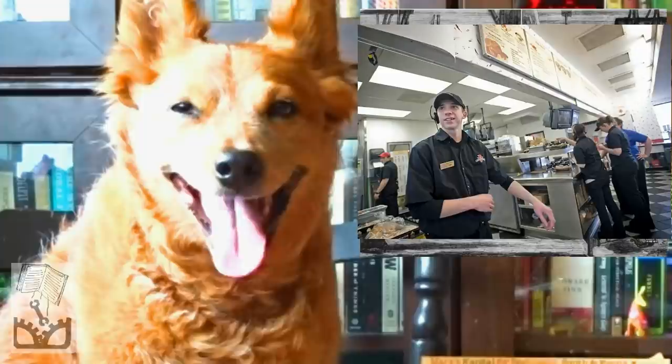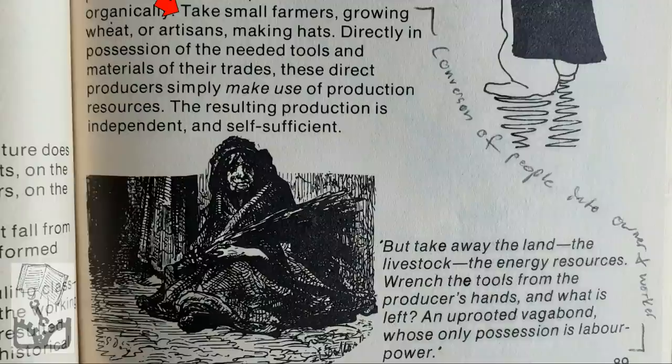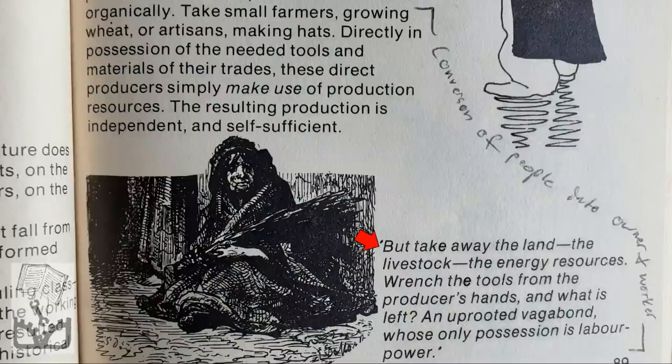The workers own nothing but their own labor power. As Smith and Evans put it: 'Take small farmers growing wheat, or artisans making hats, directly in possession of the needed tools and materials of their trades — these direct producers simply make use of production resources, the resulting production is independent and self-sufficient. But take away the land, the livestock, the energy resources, wrench the tools from the producer's hands, and what is left? An uprooted vagabond whose only possession is labor power.'